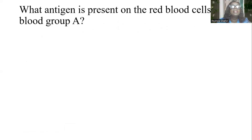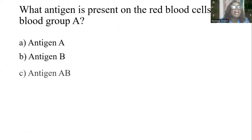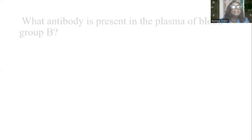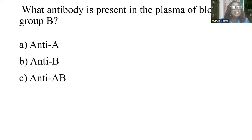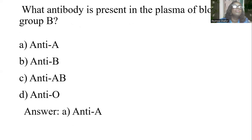What antigen is present on the red cells of blood group A? Options: A) Antigen A, B) Antigen B, C) Antigen AB, D) Antigen O. The answer is A: Antigen A. What antibody is present in the plasma of blood group B? Options: A) Antibody A, B) Antibody B, C) Antibody AB, D) Antibody O. The answer is: Antibody A is present in individuals with blood group B.